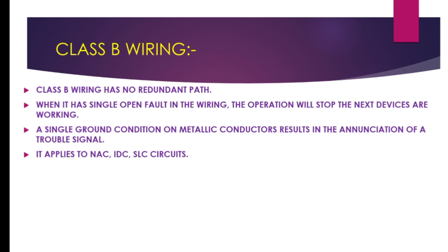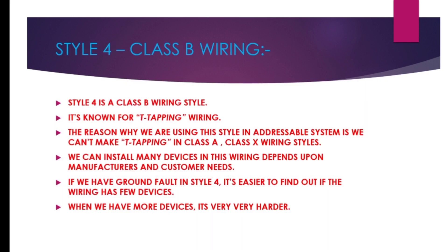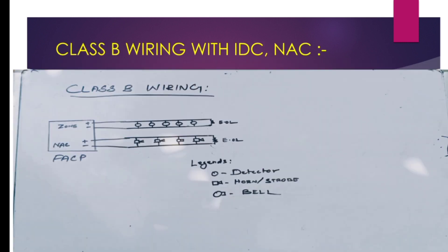When we discuss Class B wiring, it has no redundant path. When there is a single open in the wiring, operation stops towards the next devices. It applies to NAC, IDC, and SLC circuits. Conditions that affect operation are annunciated by the FACP as a trouble signal. A single ground condition on metallic conductors results in the annunciation of a trouble signal. Style 4, also known as Class B wiring, is the T-tapping wiring system. Because Class A and Class X can make T-tapping in SLC, we are using the style of Class B for that purpose.